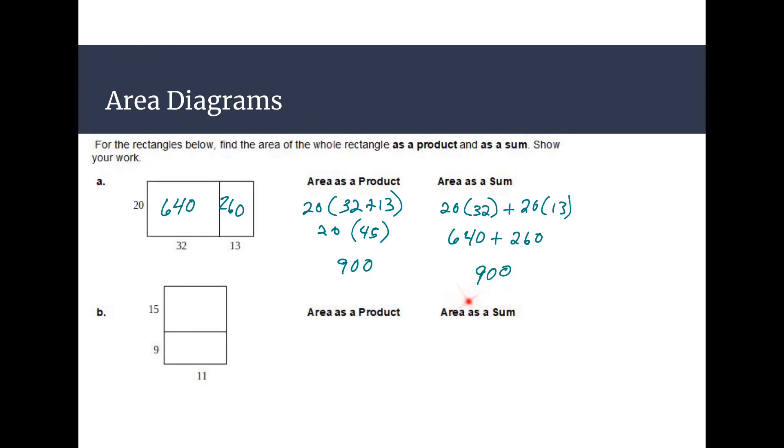Once again we got the same answer and that makes sense, we should get the same answer for both of these. And for this one once again getting 264 as our answer for each of the areas. Once again product, so it'll be 11 times 9 plus 15 the side, so 11 times the side and areas of sum finding the small one and then finding the bigger rectangle individually.